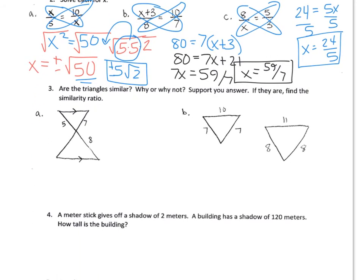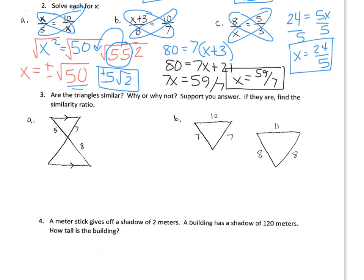So number 3, are the triangles similar? There's three ways that we can test to see if a triangle is similar. Angle, angle, so if two angles are congruent to two angles of the other triangle. Side, angle, side. If the two sides are in proportion, and the angle between them is congruent to the other triangle, then the triangles are similar. And the last one is side, side, side. If all three sides of a triangle are proportional to the other three sides.